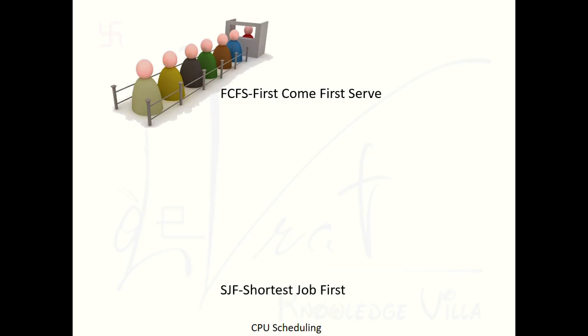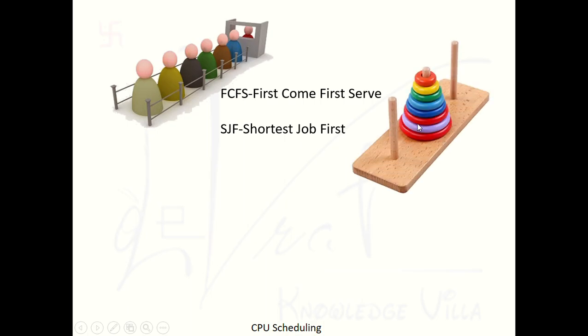The second algorithm is Shortest Job First scheduling. Whichever process requires the CPU for the smallest amount of time is served first. For example, if P1 requires 5ms, P2 requires 10ms, and P3 requires 15ms, then P1 will be served first. Like in street cricket where the younger boy bats first — the shortest job is served first.